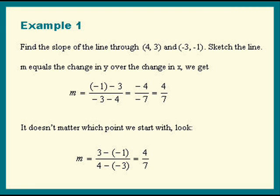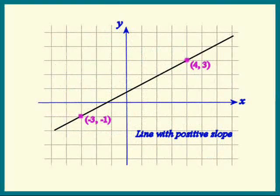Let's sketch this line and look at it. This is typical of a line with positive slope. As we move in the positive x direction, the y values are increasing. The line is rising.